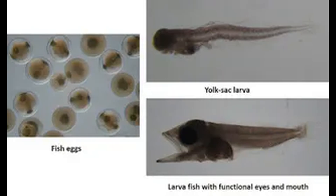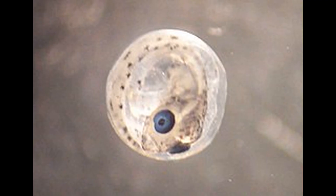Teleost fish are another well-known clade that undergo metamorphosis. In their case, metamorphosis is tightly linked with ecology. Eggs are laid in the water column, the larvae are planktonic, and metamorphosis occurs as the juvenile attains its adult ecological niche. We'll explore how flounders do this in a future tale, so stick around for that.